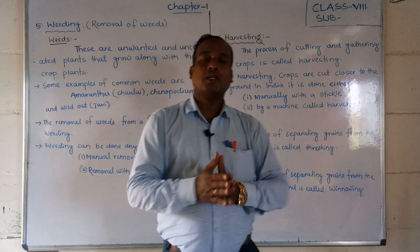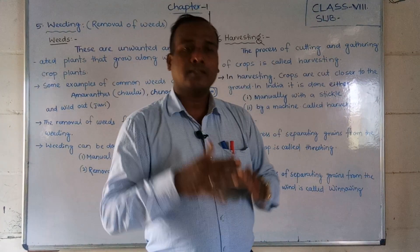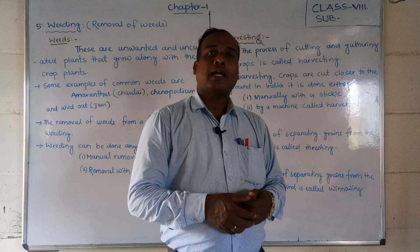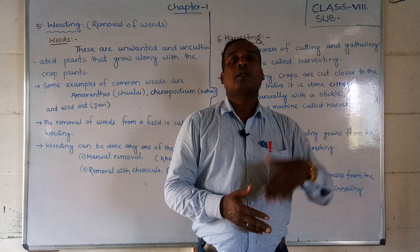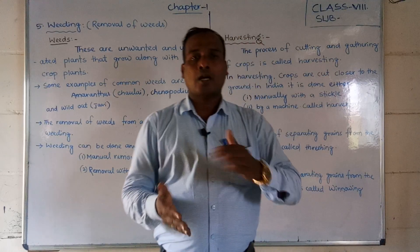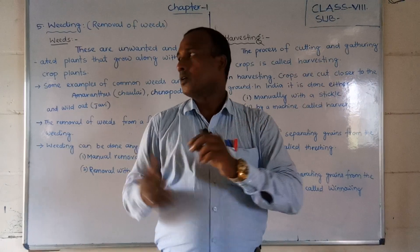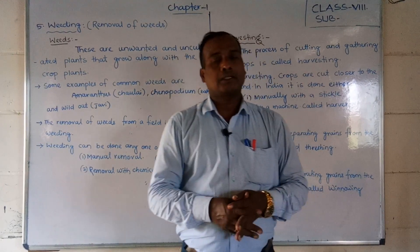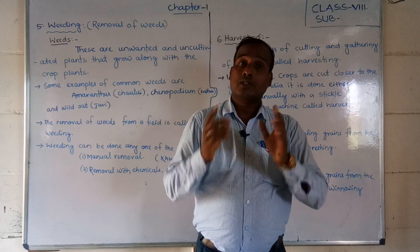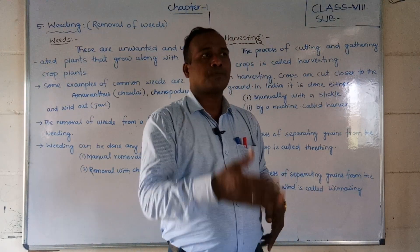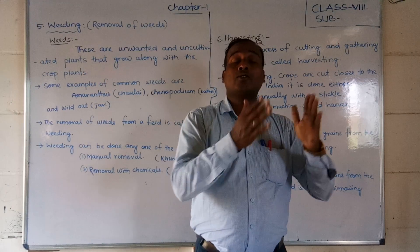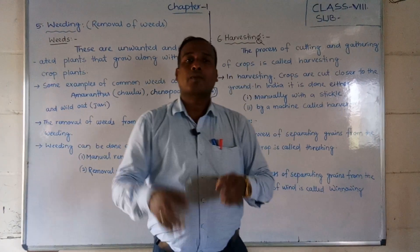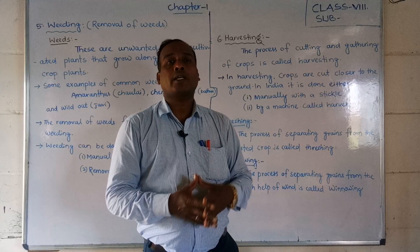The process of removing weeds from the field is called weeding. Weeding can be done by two methods: manually by hand, and also by applying chemicals. One such chemical is 2,4-D. Pesticides and insecticides are available — the one we apply to kill weeds is called 2,4-D. These chemicals kill weeds but are not harmful to our crops.